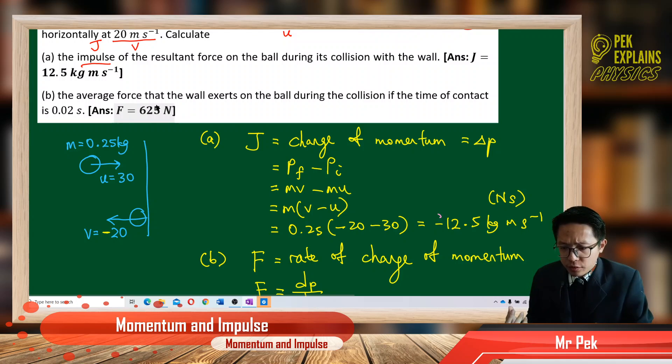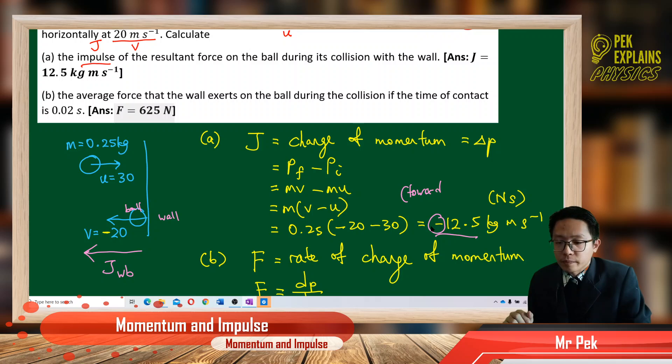So if you notice, the impulse has a negative sign. What does it mean by this negative sign? A negative sign means the impulse is directed to the left. Because it is actually the wall push the ball. The wall push the ball to the left. Wall on ball. So you must write the direction towards left. Alright.